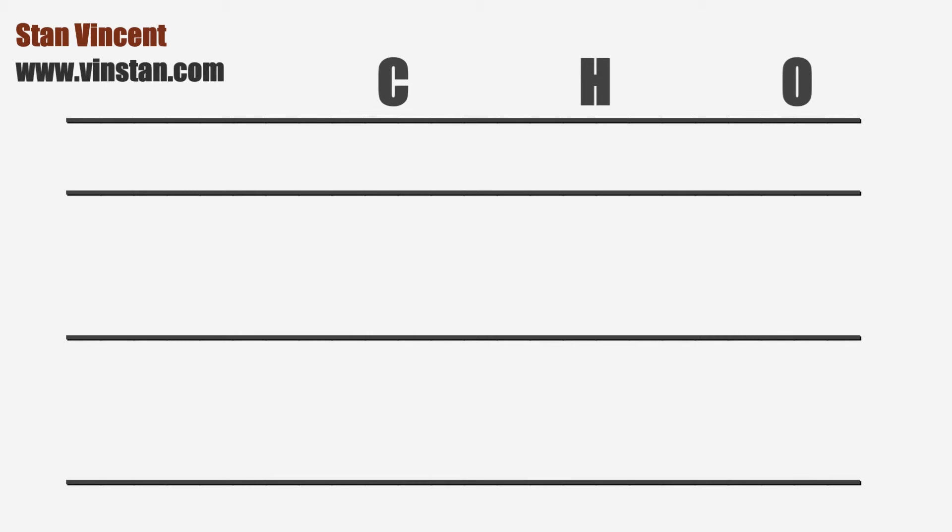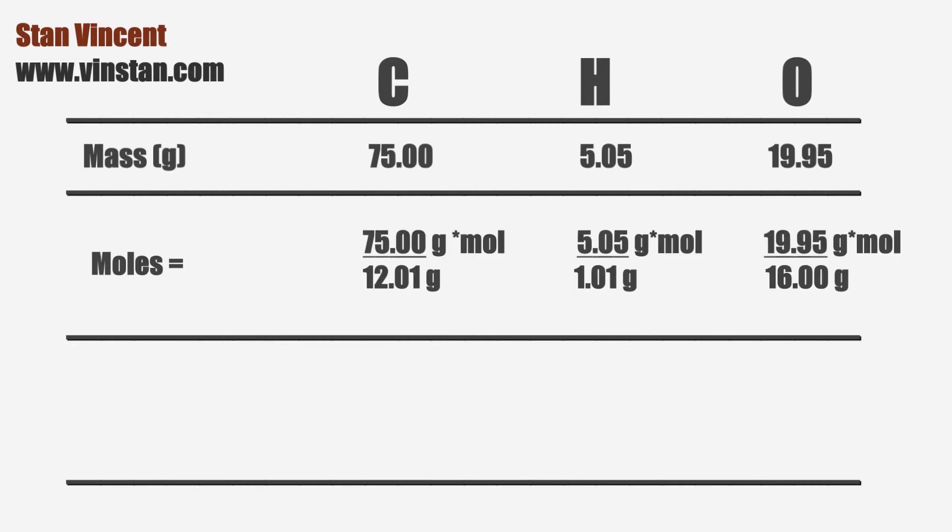Now let's calculate the simplest mole ratio in which carbon, hydrogen, and oxygen are combined. The mass of carbon, hydrogen, and oxygen present in 100 grams of the compound are: carbon 75 grams, hydrogen 5.05 grams, and oxygen 19.95 grams. Next, we will determine the moles of carbon, hydrogen, and oxygen. For this, we will divide the mass of carbon by 12.01 grams per mole, hydrogen by 1.01 grams per mole, and oxygen by 16 grams per mole. This will give us 6.245 moles of carbon, 5 moles of hydrogen, and 1.246 moles of oxygen.